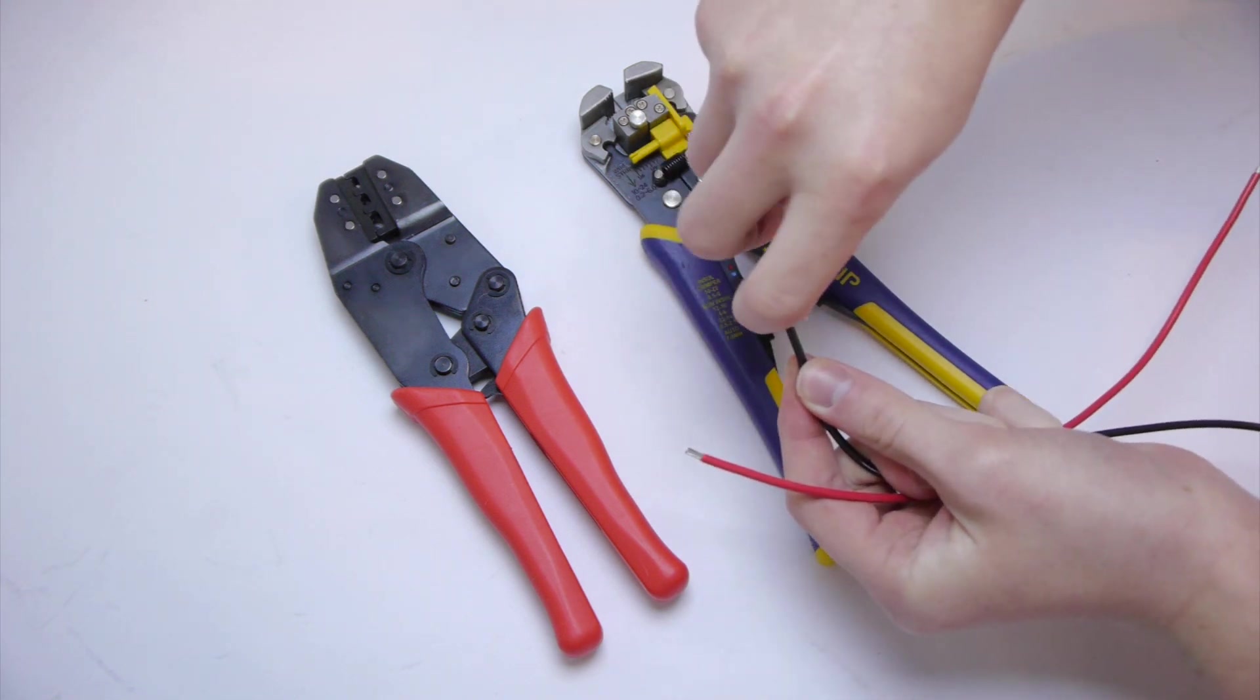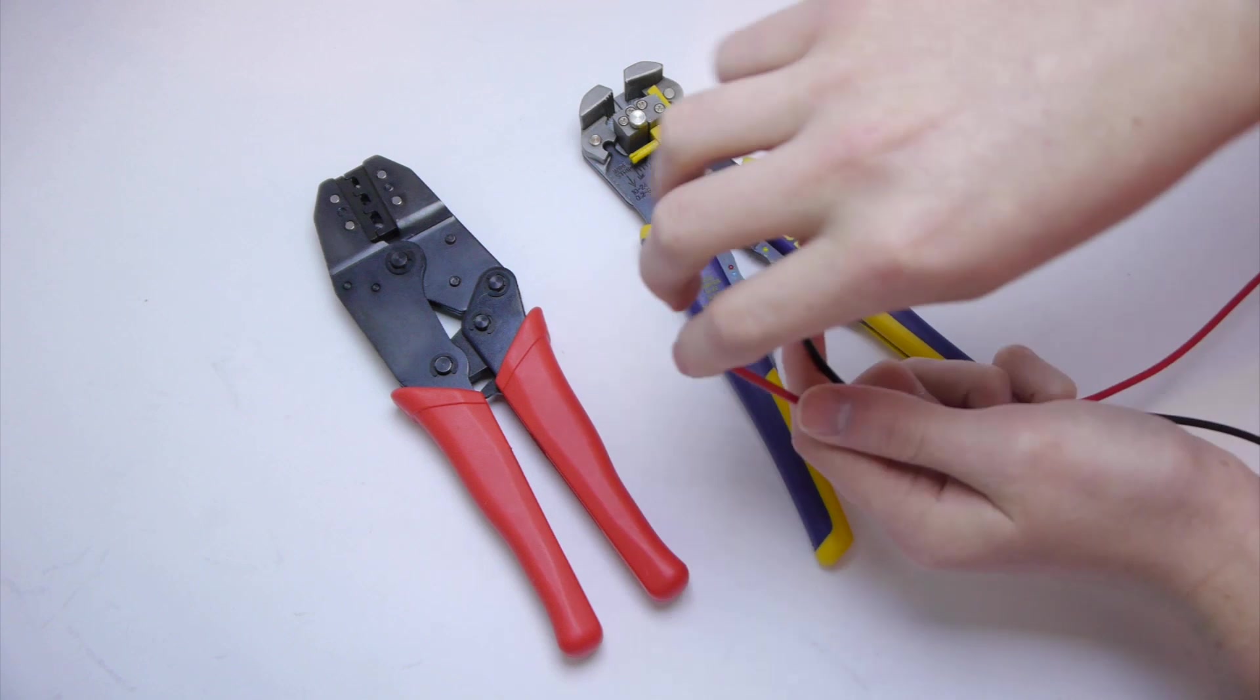Next you want to twist the ends to make sure there aren't any little tiny pieces of wire sticking out to the side.